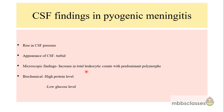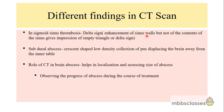When meningitis is suspected, a CT scan must always be done first to rule out brain abscess and subdural empyema, and after ruling out papilledema, lumbar puncture is done. CSF findings in pyogenic meningitis: raised CSF pressure, turbid appearance, increased total leukocyte count with predominant polymorphs, high protein level, and low glucose level — these findings are consistent with pyogenic meningitis. On CT in sigmoid sinus thrombosis, we may get the delta sign or empty triangle sign, where there is enhancement of the sinus walls but not of the contents.